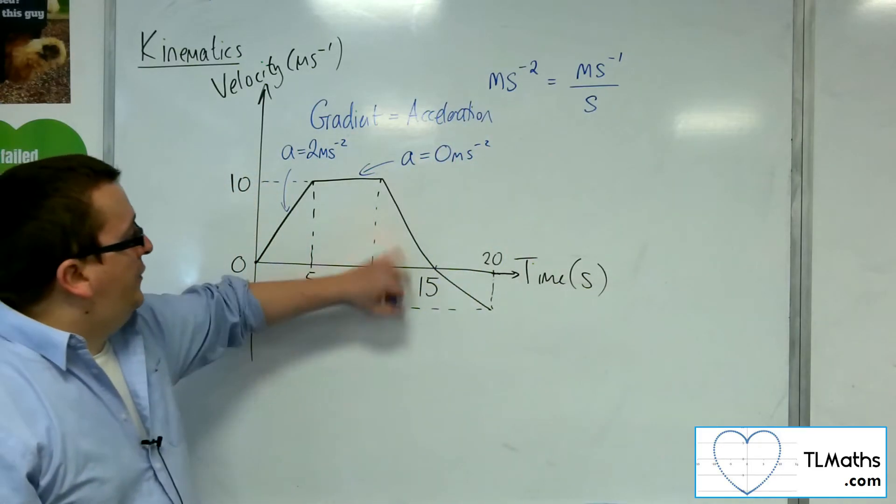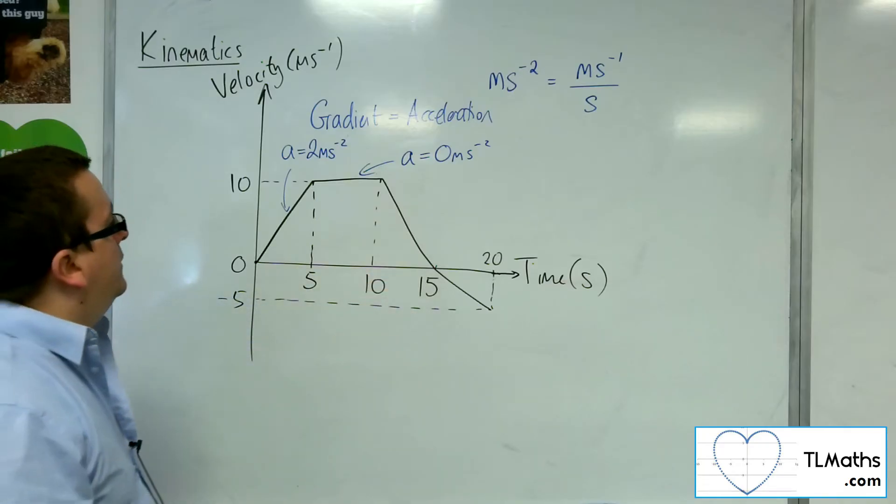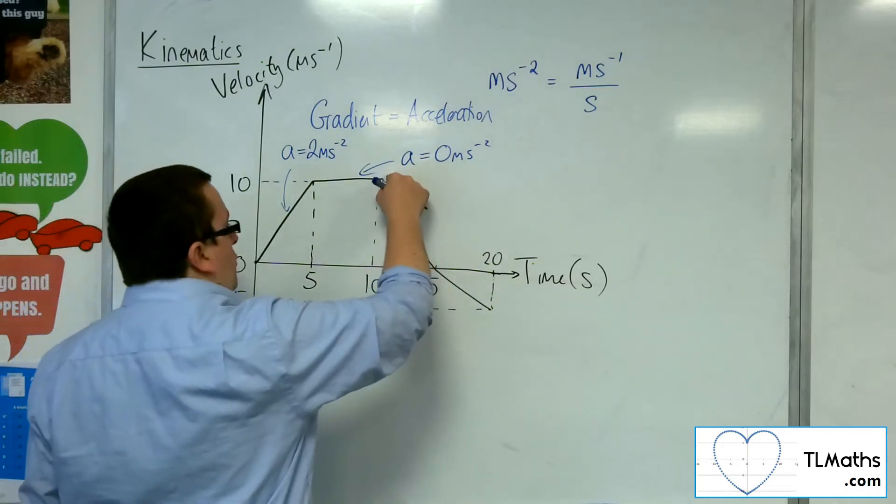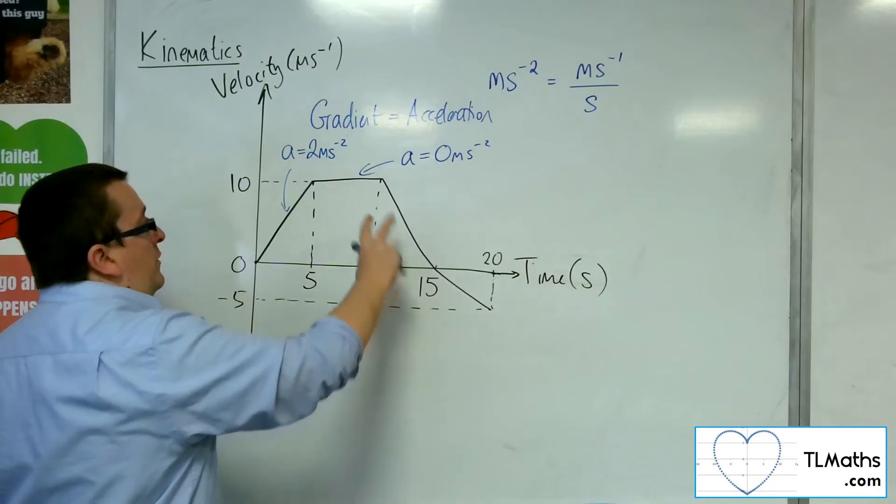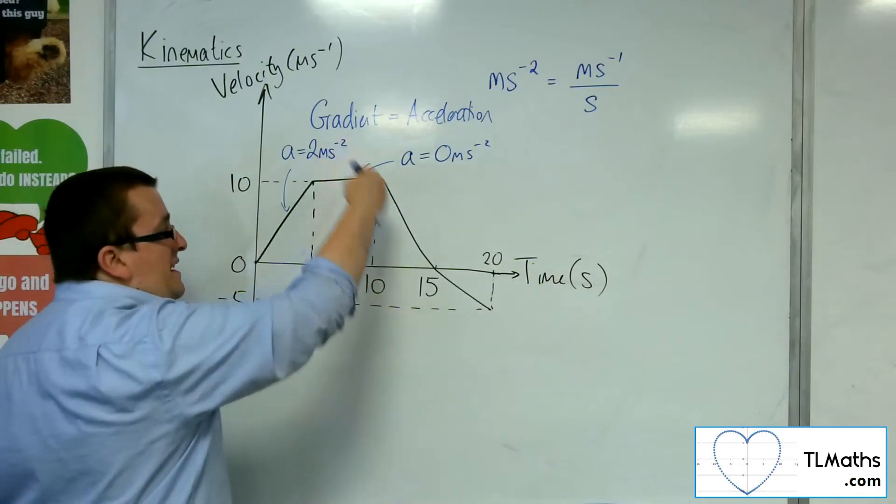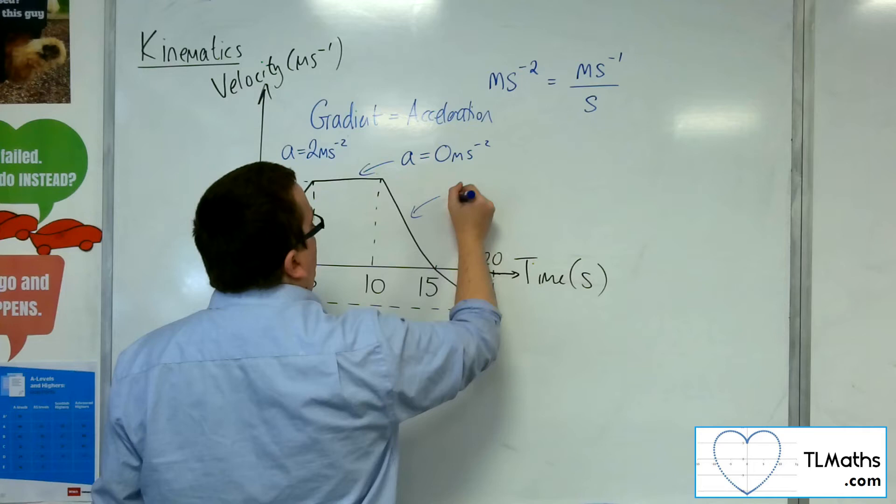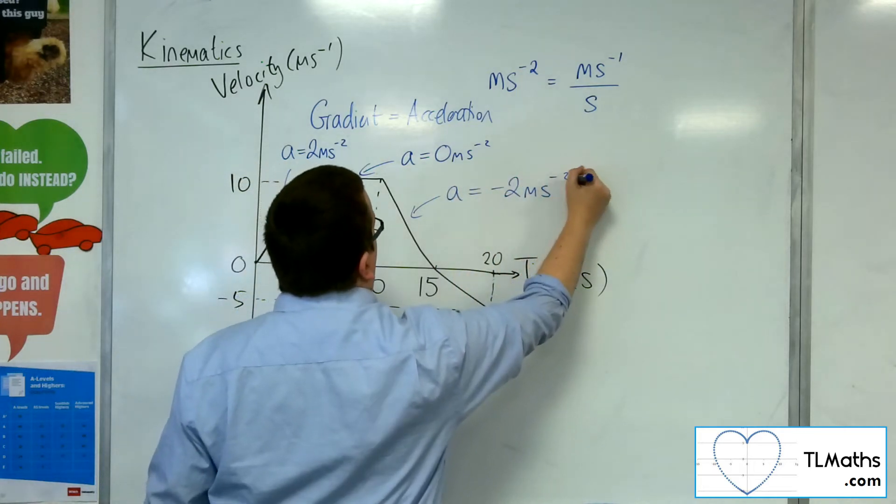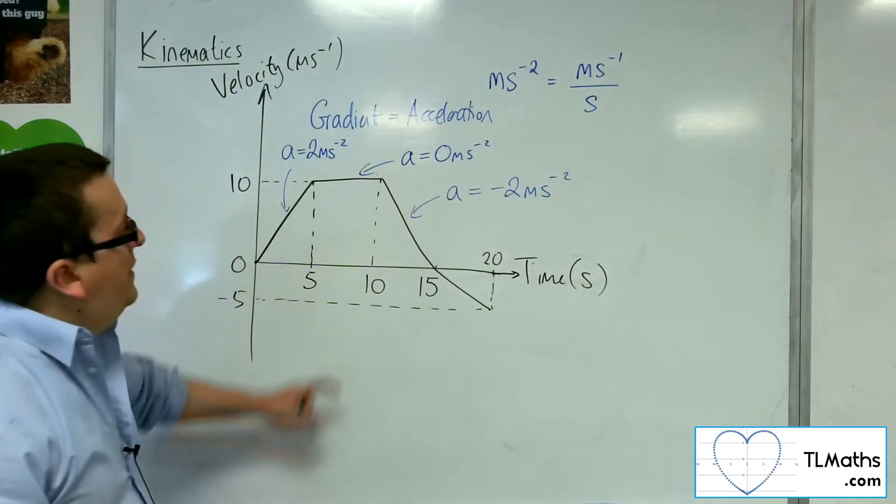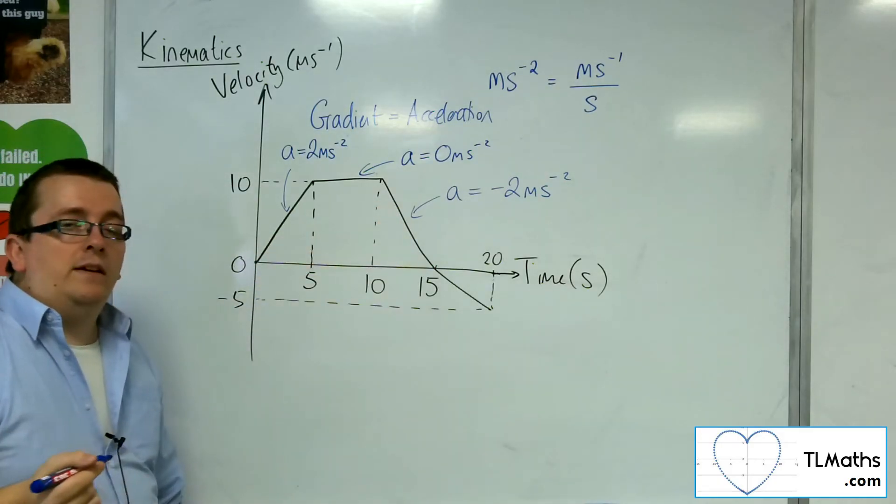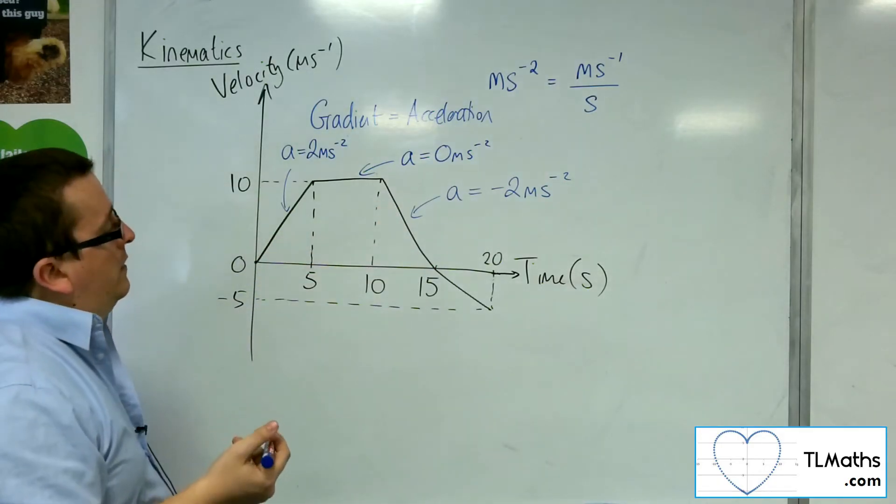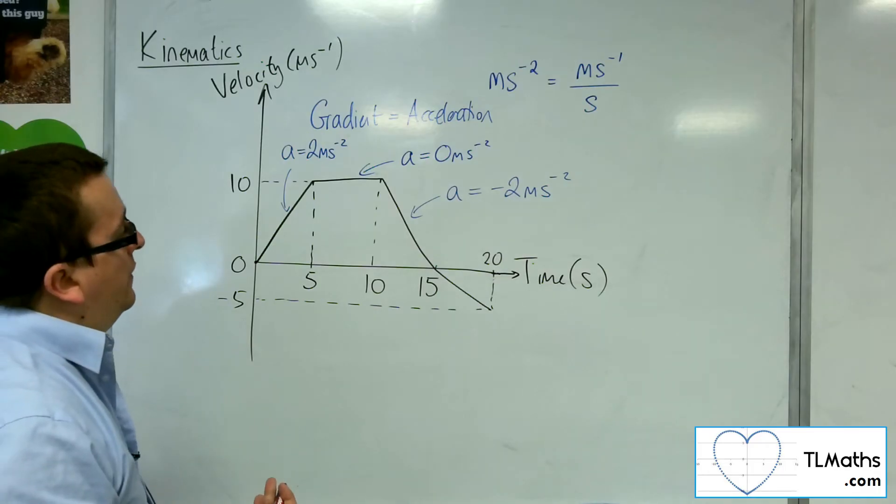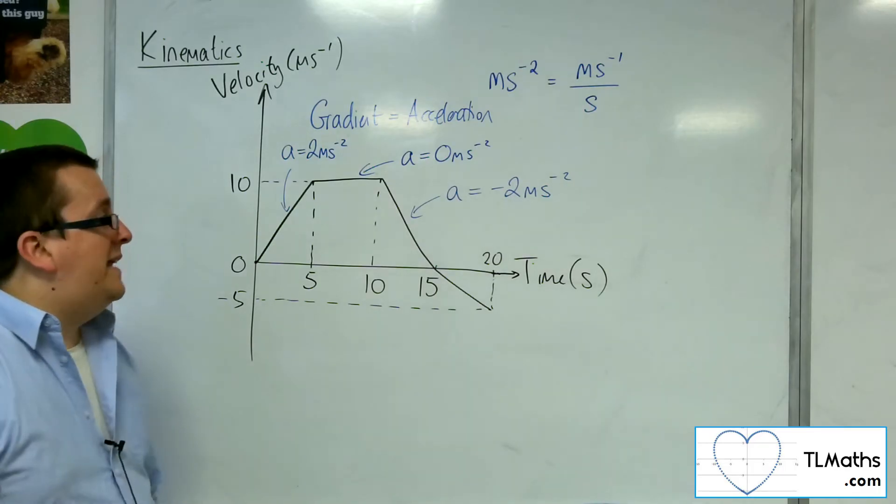Now for the third section, between 10 and 15 seconds, we've got going from 10 down to 0. So 10 divided by 5 is 2, but it's negative gradient. And so the acceleration here will be negative 2 metres per second per second. So here the acceleration is representing a decrease in the velocity. So we are slowing down.